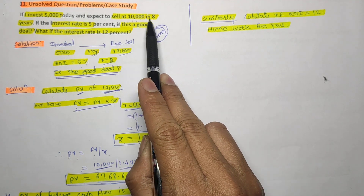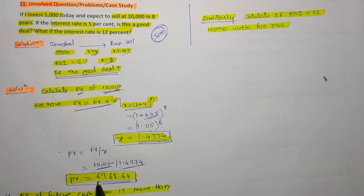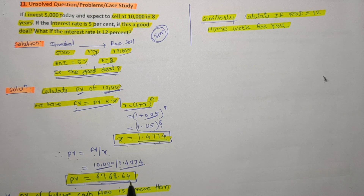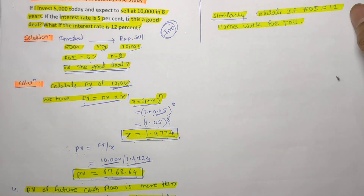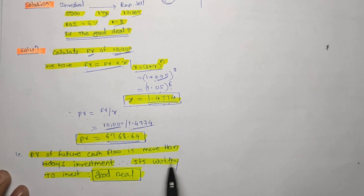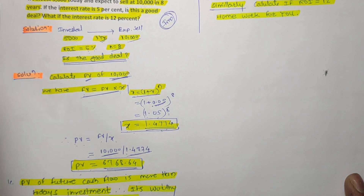The present value of 10,000 received after eight years is 6,768 rupees and 64 paise. We invested 5,000 rupees, and the present value of the future cash flow is more than today's investment. Therefore the deal is good. If the present value of the future cash flow is more than today's investment, it is worthy to invest — this is a good deal.